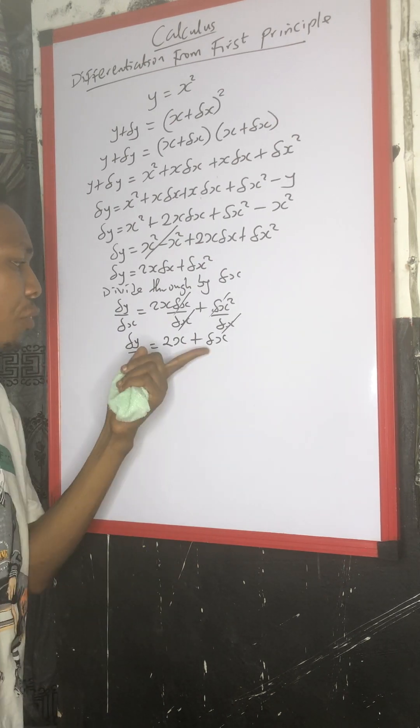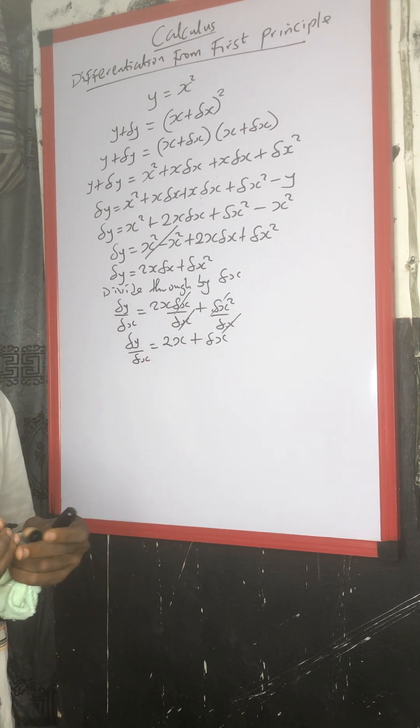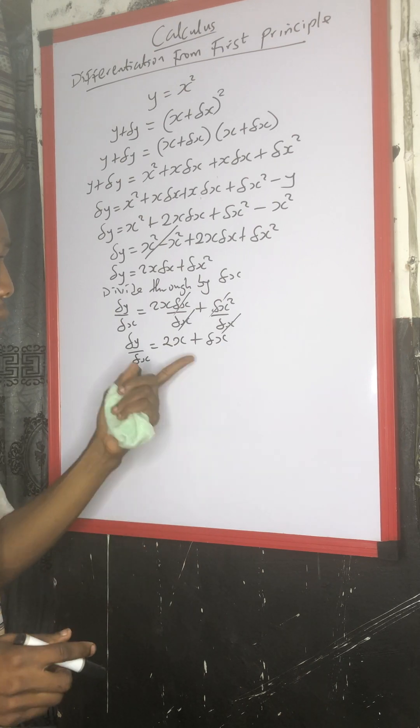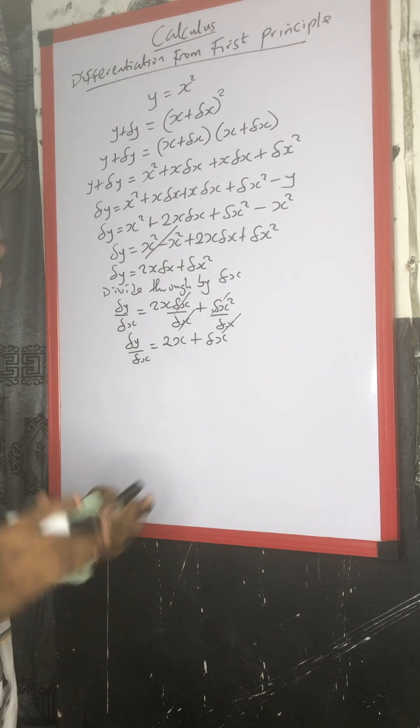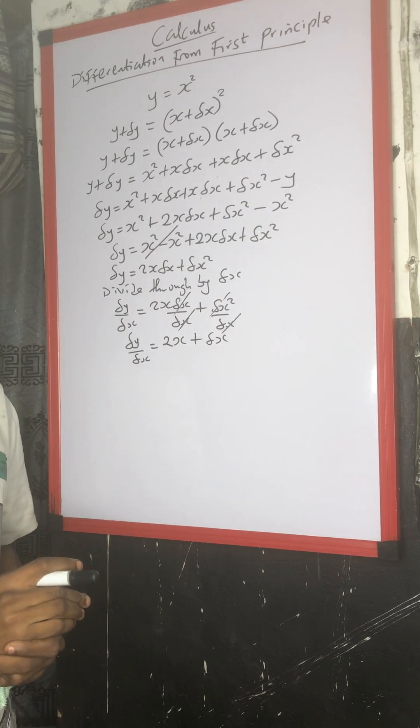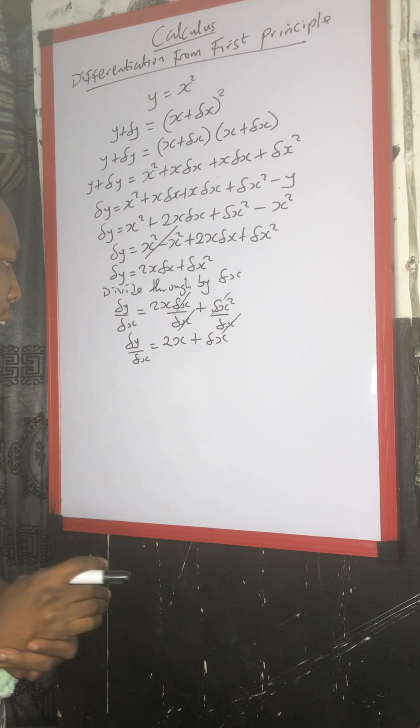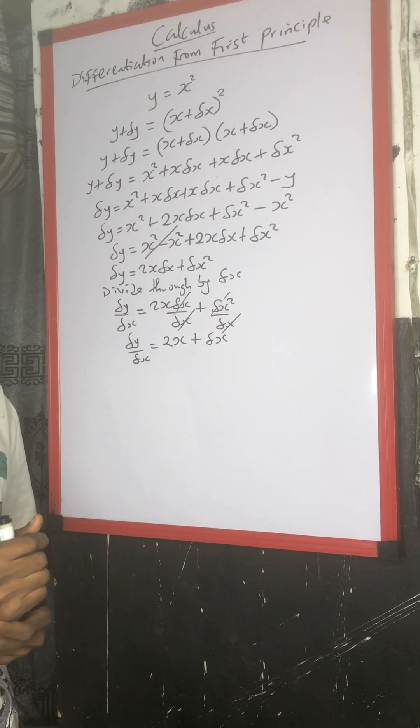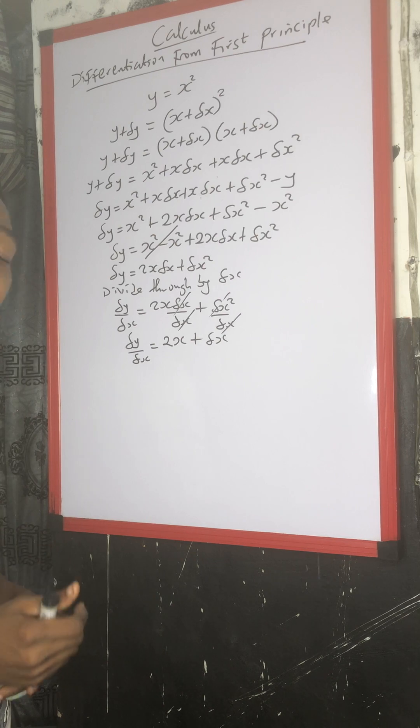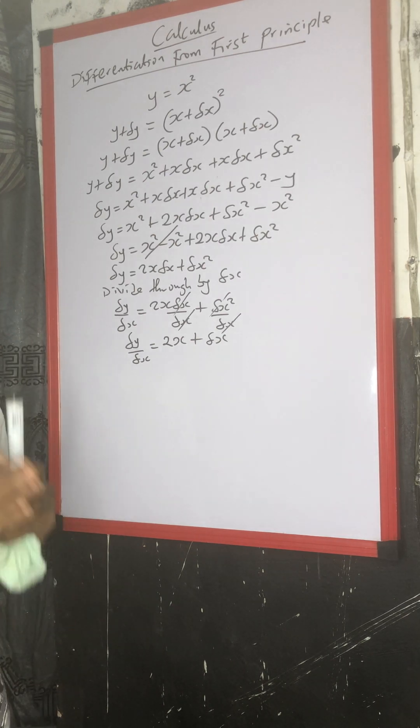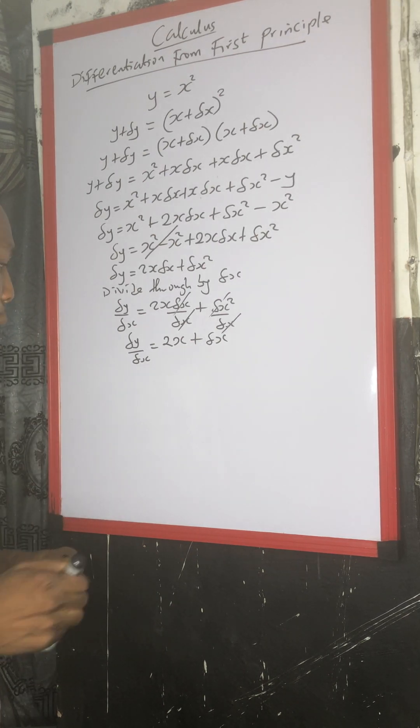Then, if you observe, even after you eliminate or you cancel out change in x, you are still having change in x in the expression. So what you are going to do, this will take you back to limits. So you are going to limit change in x to be 0. It simply means that anywhere you see change in x, you can substitute the values to be 0.